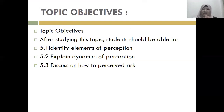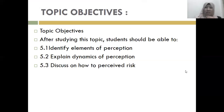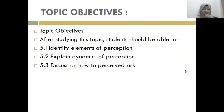For the topic objective, after studying this topic, the students should be able to identify the elements of perception. For 5.1 we have the elements, then 5.4 covers the dynamics of perception, and 5.3 discusses how to perceive information. This is a clue for you — some of the exam questions will come from here.